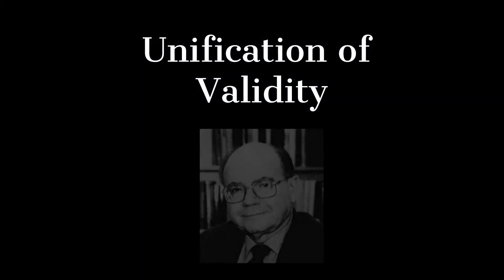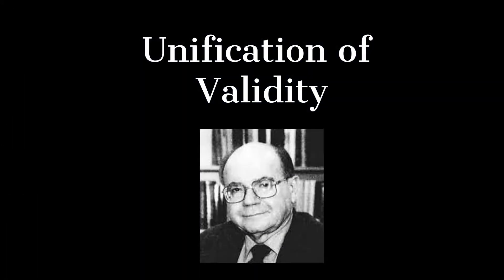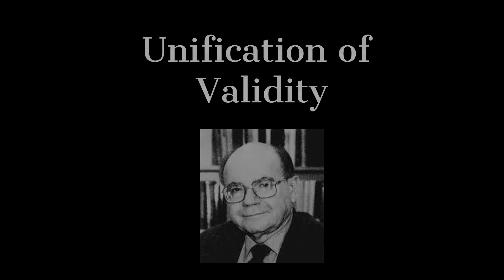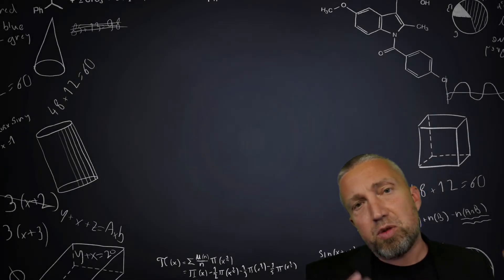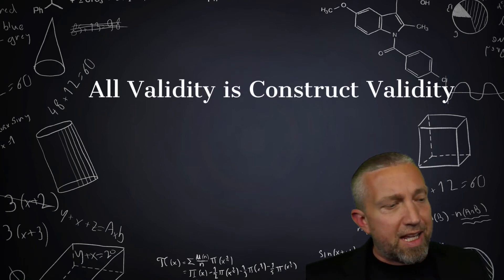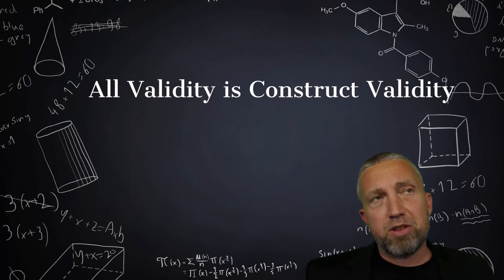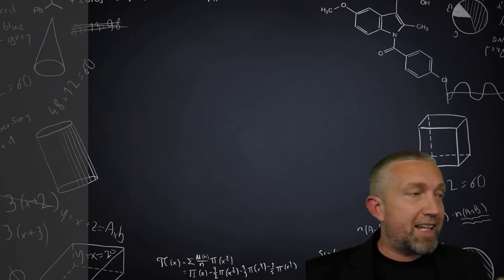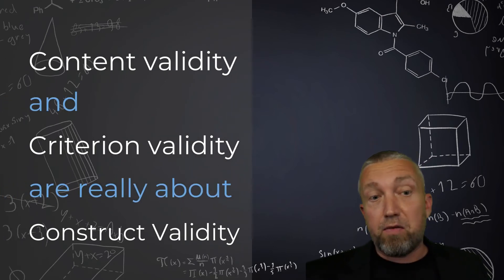Sam Messick was arguably the theorist who was primarily responsible, who was the main person really pushing for the unification of validity theory. Messick was concerned about meaning. What do the scores mean? How does theory, evidence, and so forth inform the meaning of our scores? He argued through a series of multiple papers that anything that contributes to the meaning of the score is ultimately concerned about construct validity. Since criterion relationships and the content of a test informs the meaning of my scores, it's really concerned about construct validity.